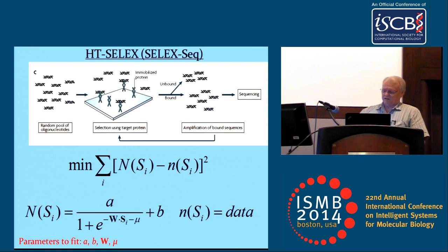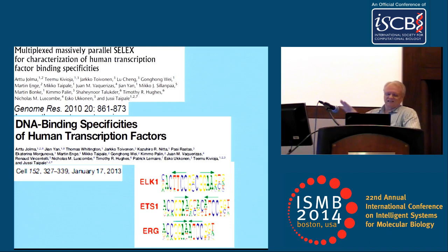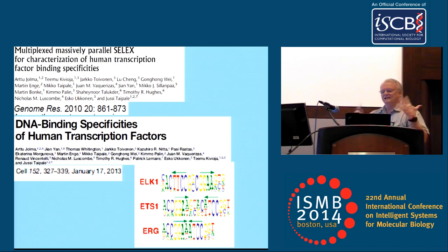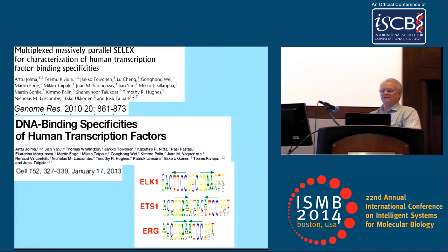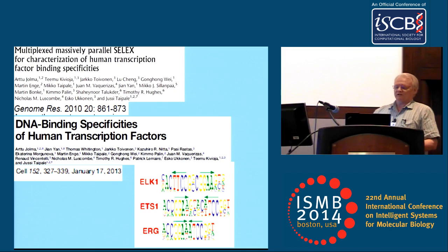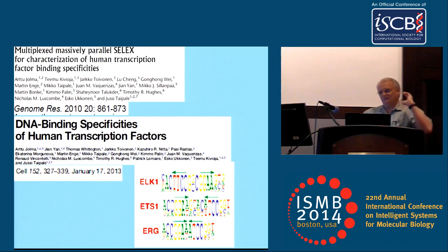We had published several years ago a method called BMO that worked pretty well on this. This method was invented more or less simultaneously by three different groups, but the group that has really pushed it the farthest is Taipale in Stockholm, with collaborations with Tim Hughes and several other people. In the initial 2010 paper they did about 20 factors, and in a more recent one they've done over 200 factors. But as a person with long experience with motifs, when I look at these things, they look over-specified to me.